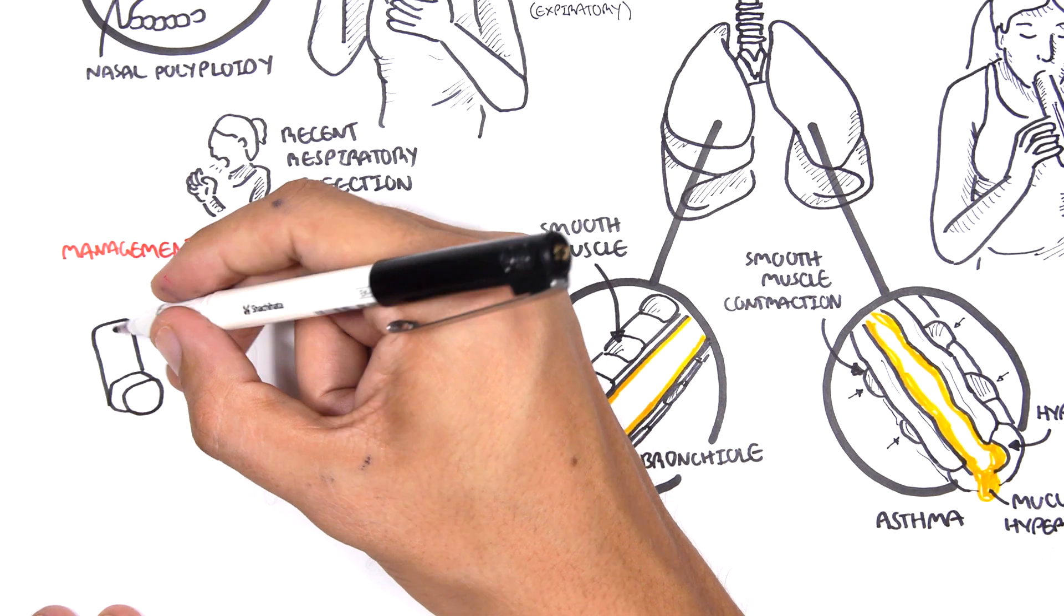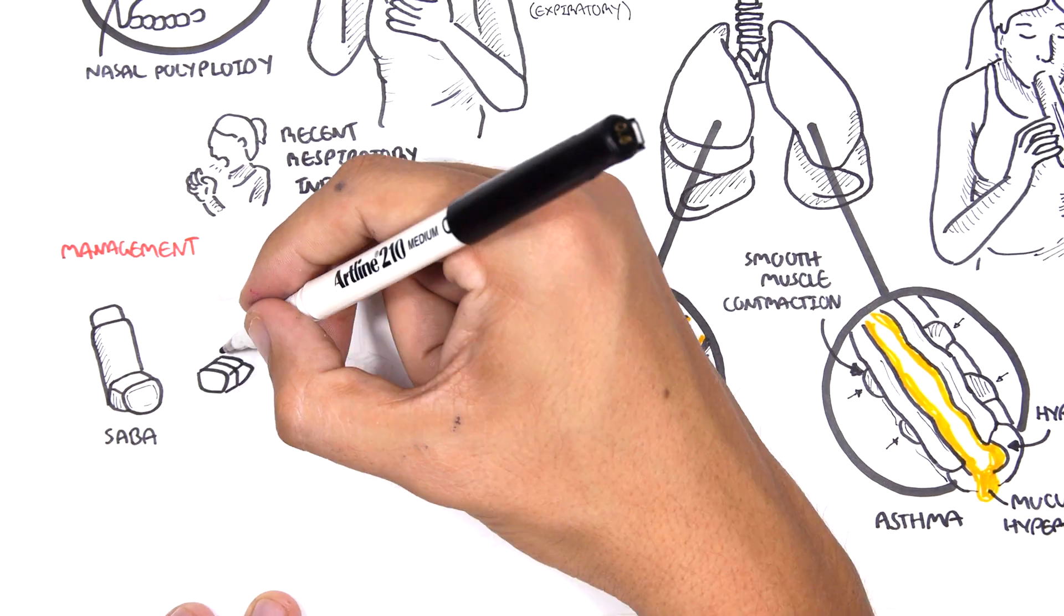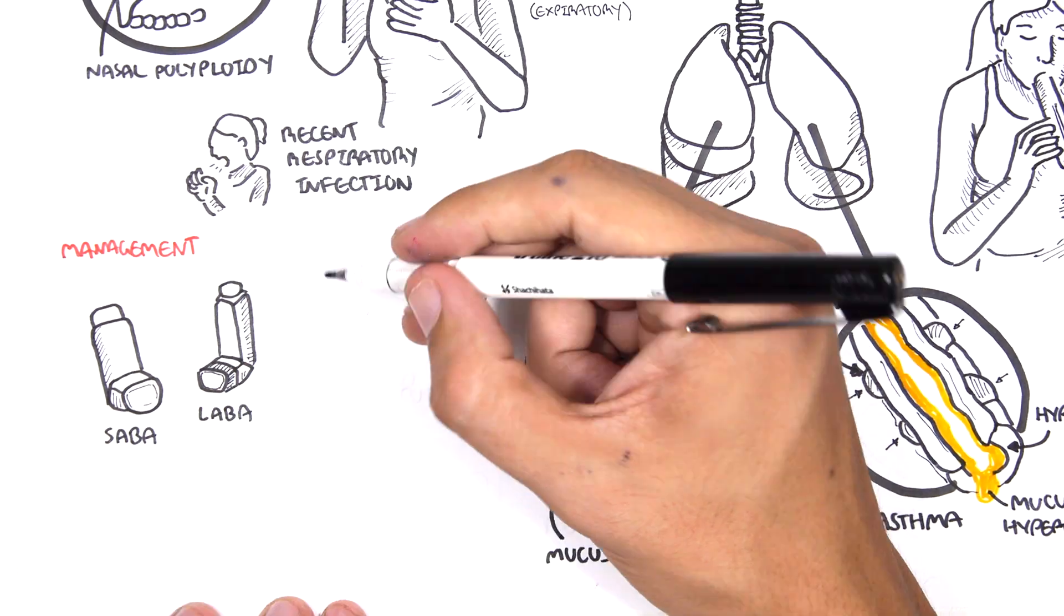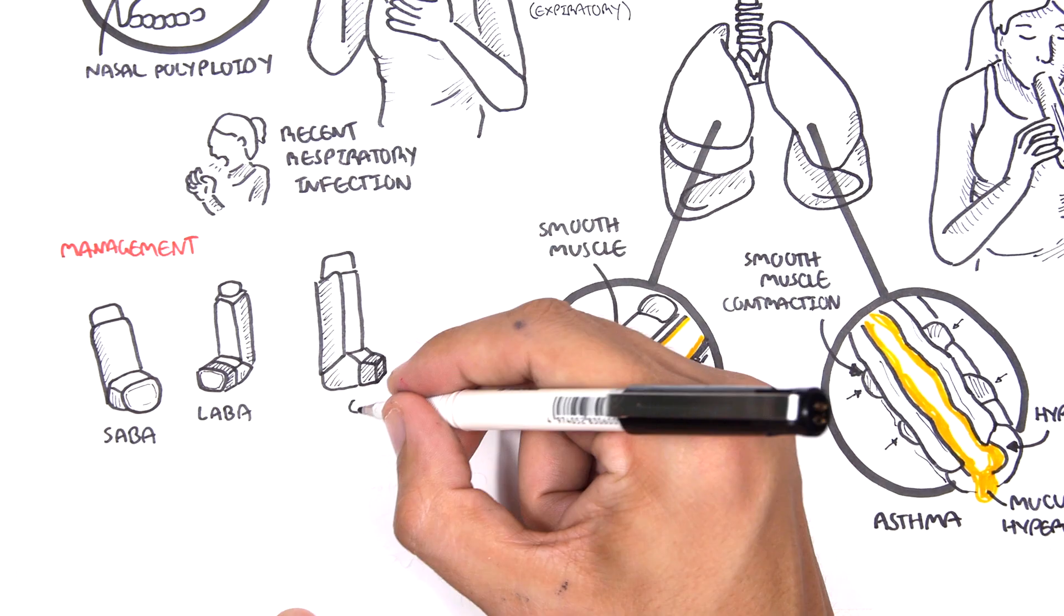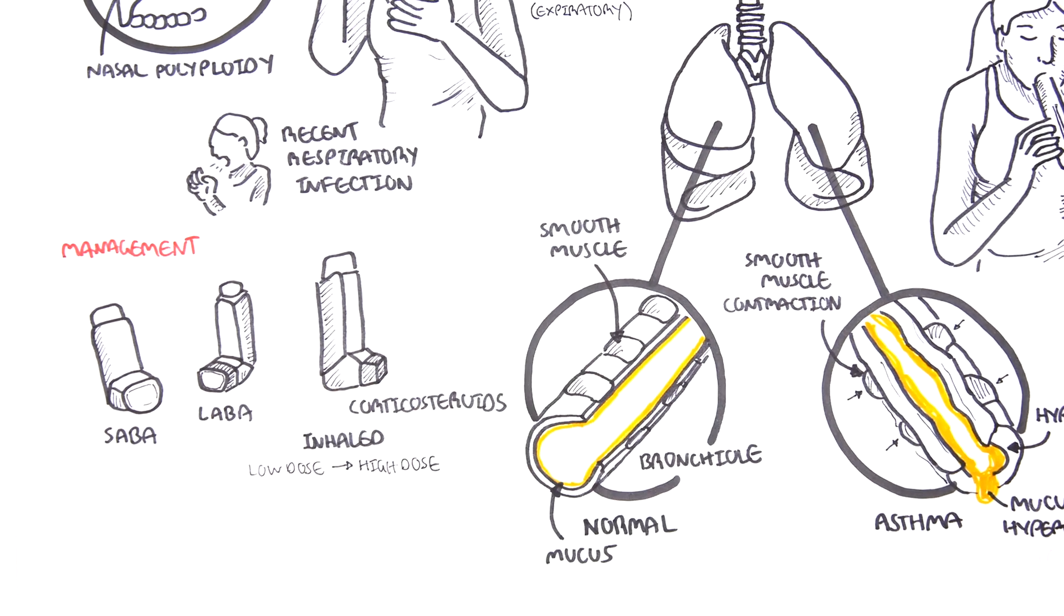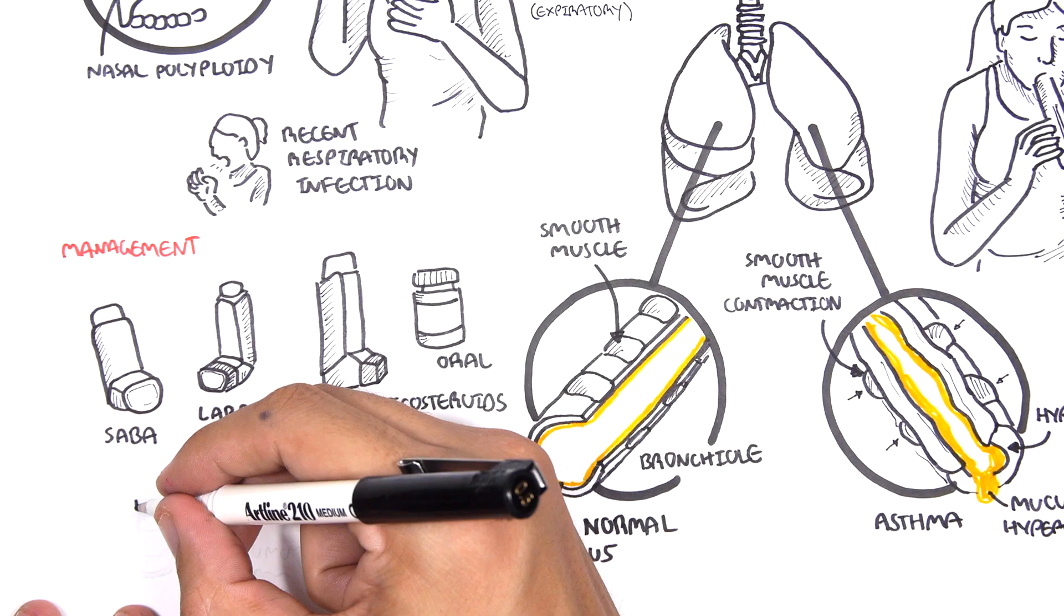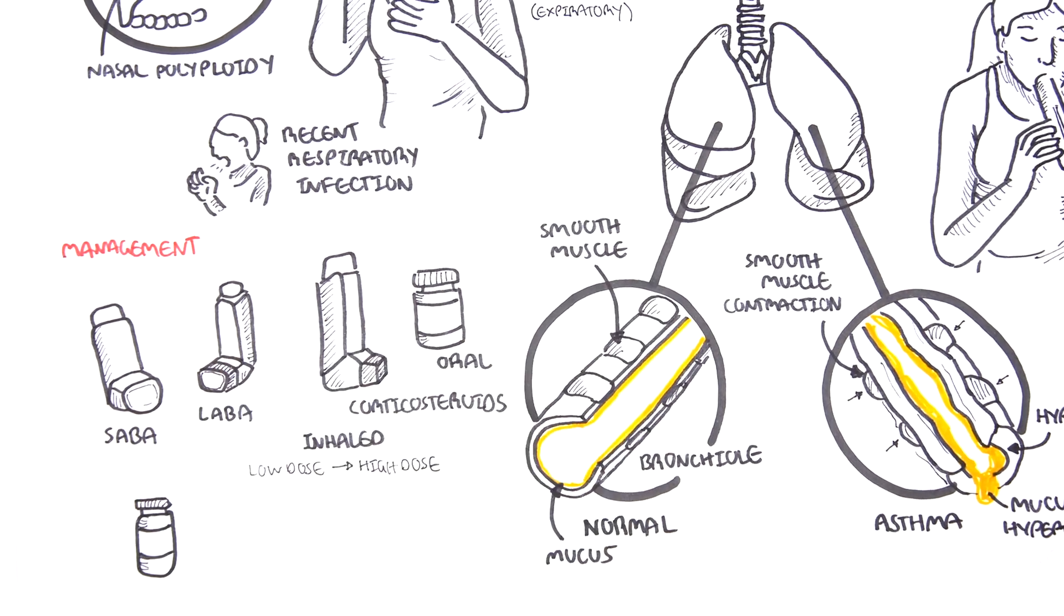Medications include short-acting beta agonists, long-acting beta agonists (LABA), corticosteroids inhaled starting with low dose and then moving to higher dose if severity increases, and oral corticosteroids can also be used in severe cases.